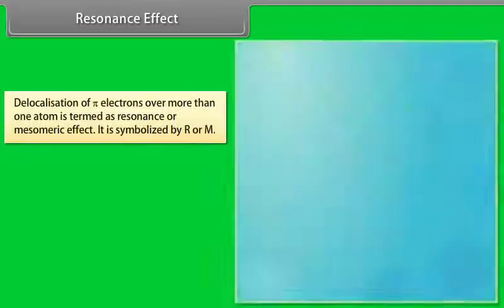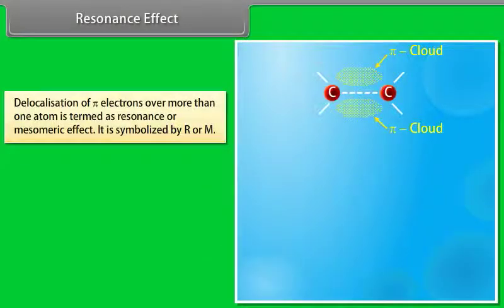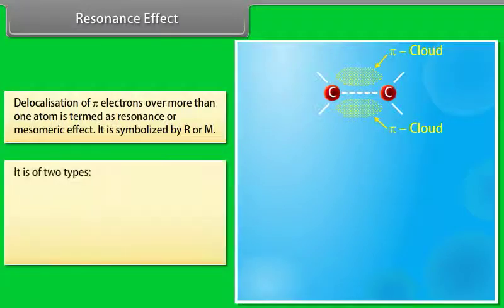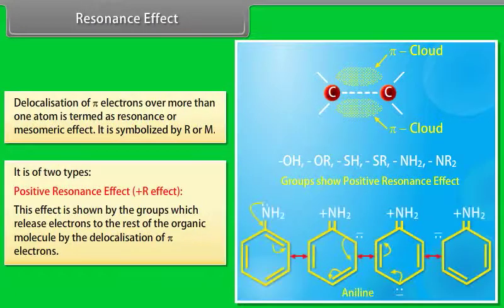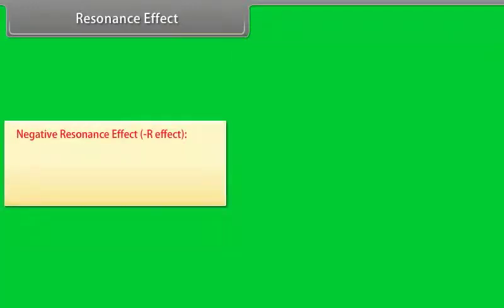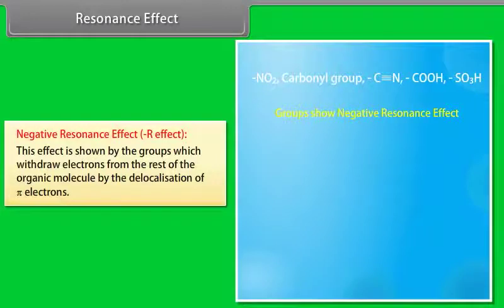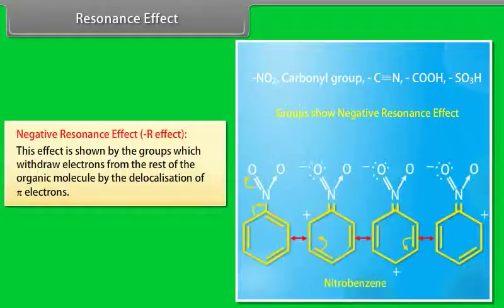Resonance effect: delocalization of pi-electrons over more than one atom is termed as resonance or mesomeric effect, symbolized by R or M. It is of two types. Positive R effect: shown by groups which release electrons to the rest of the organic molecule by delocalization of pi-electrons — for example, aniline. Negative R effect: shown by groups which withdraw electrons from the rest of the organic molecule by delocalization of pi-electrons — for example, nitrobenzene.